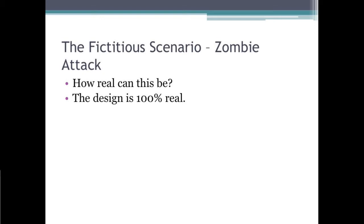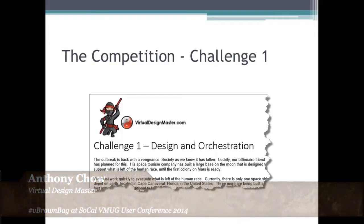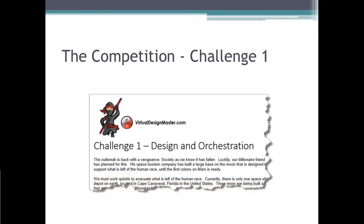Let me show you some of the challenges. The first challenge is to design and orchestrate. Basically there is a zombie attack and the human race has to move to a different planet. The job is to create a manufacturing system to make space shuttles so the human race can move to a new planet. The second challenge is adapt and constrain.